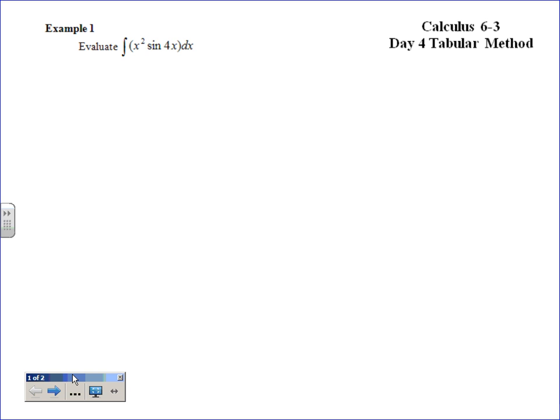If we take a look at this one, we do basically want one of the variables to go away, if possible. Is either one of those going to go away, x squared or sine of 4x? If you kept taking the derivative of x squared, it will eventually go away, correct? And sine of the 4x, pretty much no matter what you do with that, that's not going anywhere.